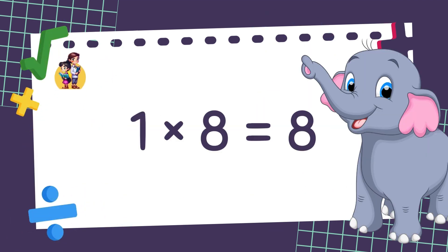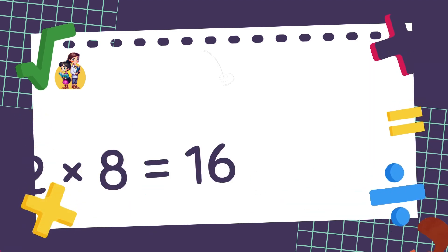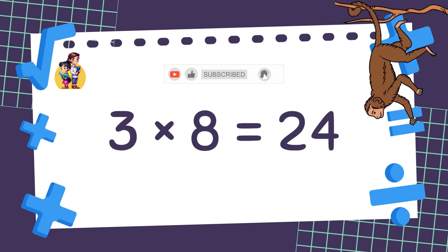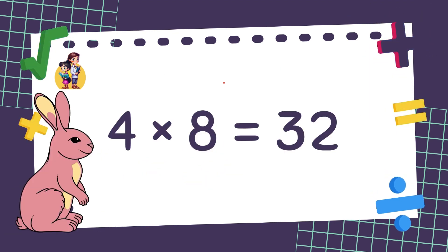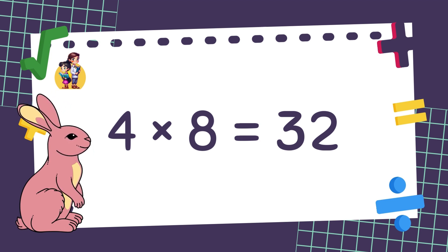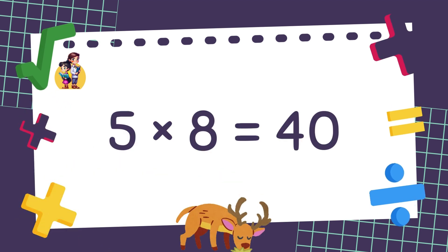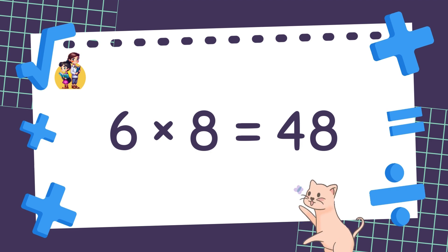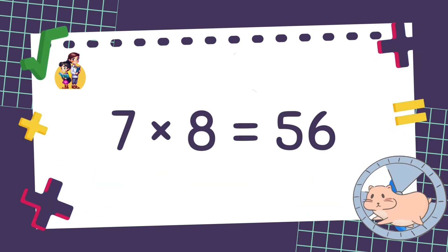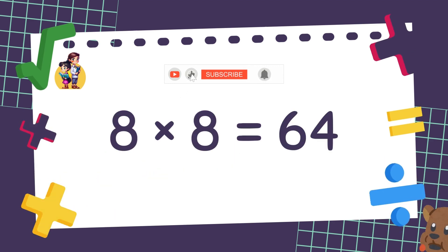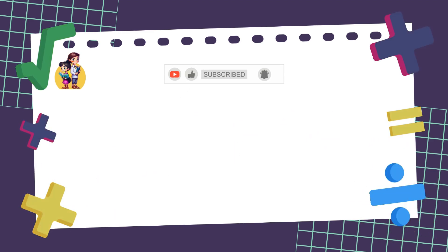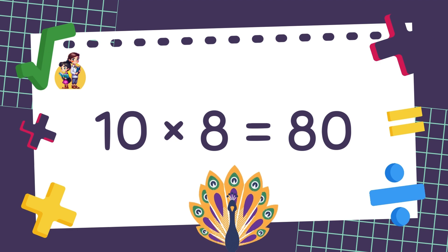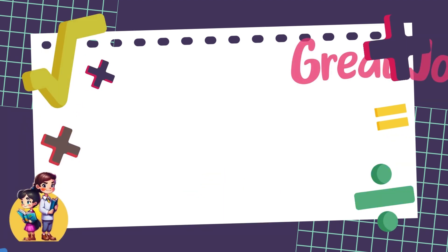1 times 8 is equal to 8. 2 times 8 is equal to 16. 3 times 8 is equal to 24. 4 times 8 is equal to 32. 5 times 8 is equal to 40. 6 times 8 is equal to 48. 7 times 8 is equal to 56. 8 times 8 is equal to 64. 9 times 8 is equal to 72. 10 times 8 is equal to 80. Well done!